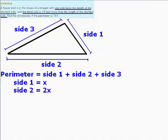The question also tells us that the third side is 15 feet more than the length of the shortest side. Therefore, side 3 must be equal to 15 plus X, the shortest side.